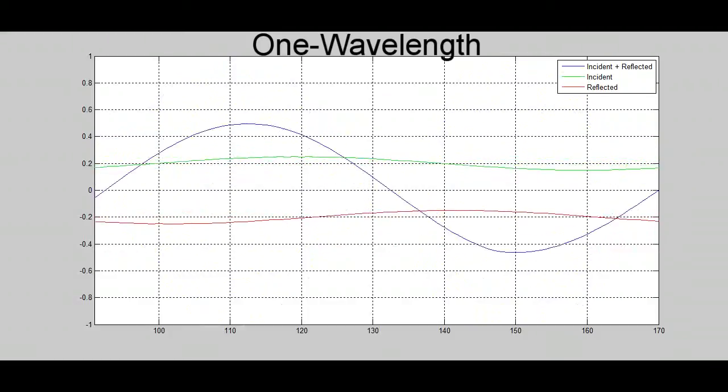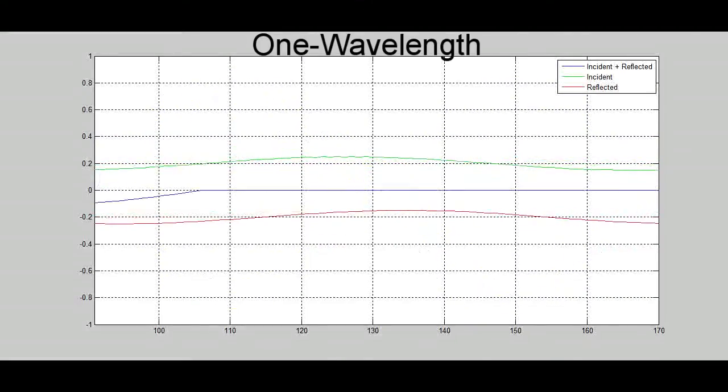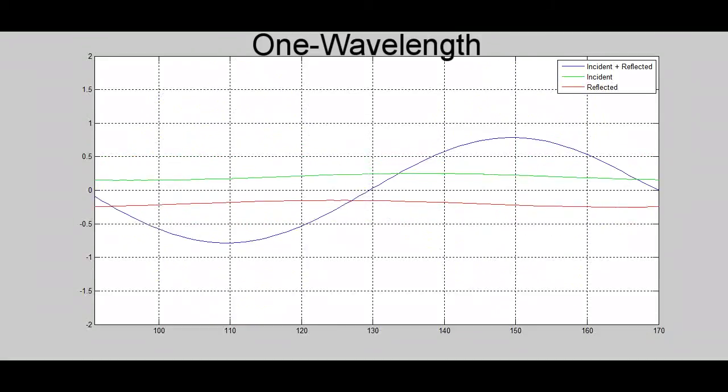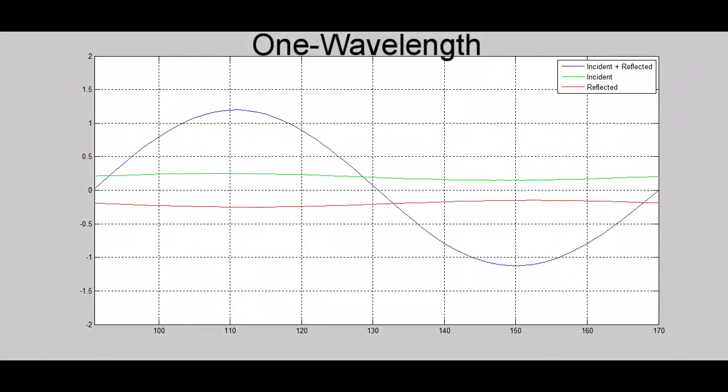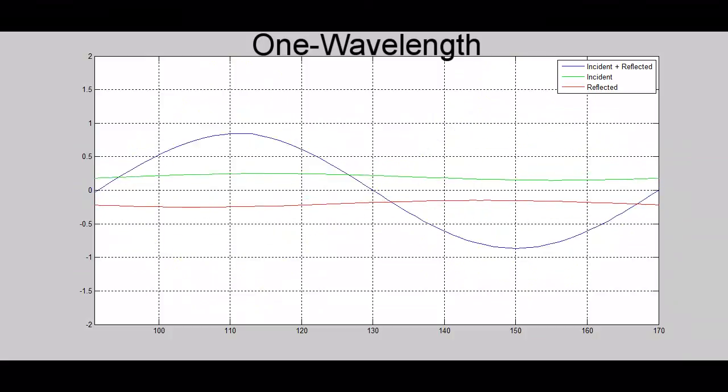Because the voltage source on the left is not a perfect fixed point, our center null moves around a little bit. As the voltage wave builds, the small voltage source looks more like a fixed point and the center will stabilize.